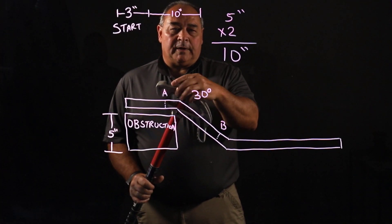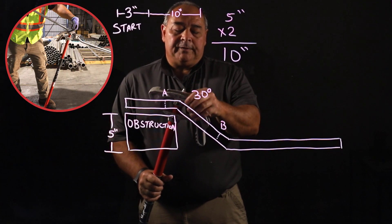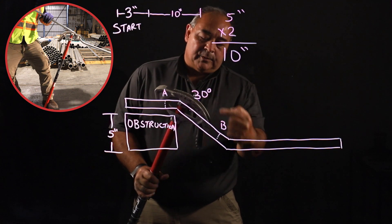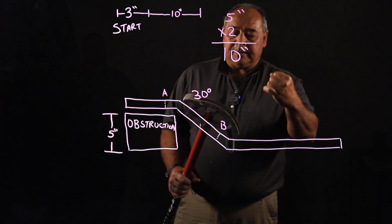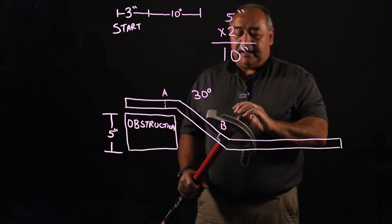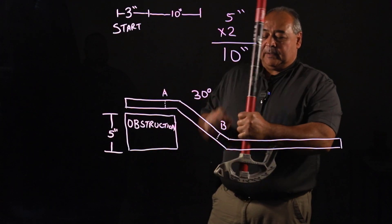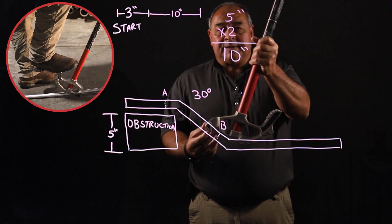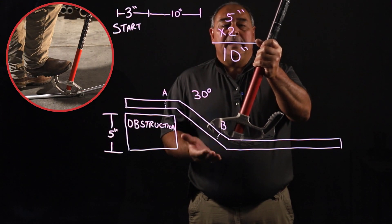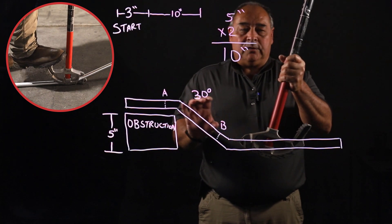You would bend this to 30 degrees going this way. Then you just spin the pipe around and slide it through. And what it ends up being, it changes the orientation to the bender being like this. And then you would bend the second bend at 30 degrees, and it will equal an offset.